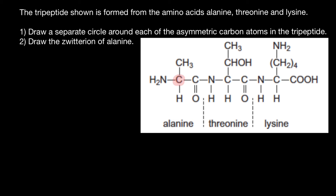Now let's consider serine. Again, this carbon atom here is going to be asymmetric or chiral because it is connected to an amino group, a hydrogen, a carboxylic group, and an R group here. So we can also circle it.